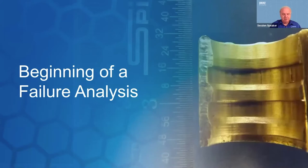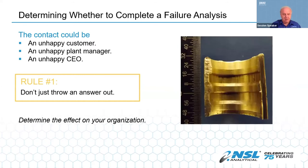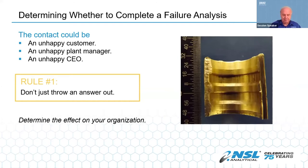The first part concerns itself with the beginnings of a failure analysis. The company first needs to determine whether it's worth the effort. If you're inside the organization, it usually starts with a phone call to you or someone else — a customer, VP, plant manager, or maintenance guy. Rule number one: you can't knee-jerk your way through this and throw a possible answer out, because you end up spending a lot more time on it later. It's really tempting just to get it off your desk.